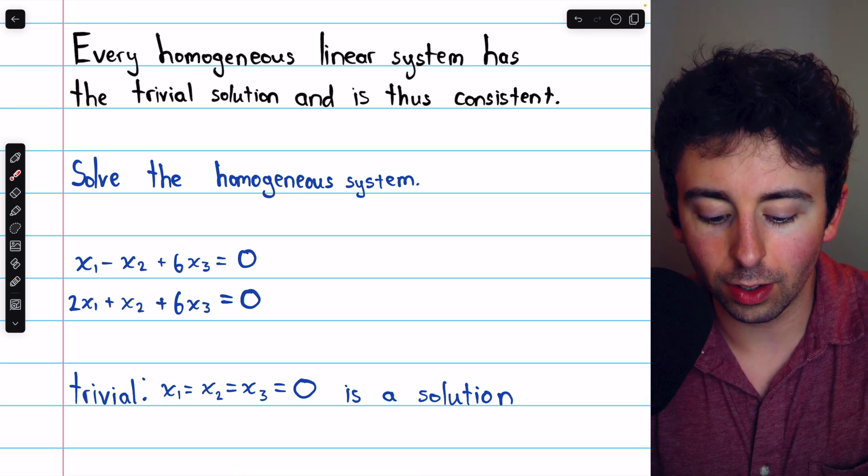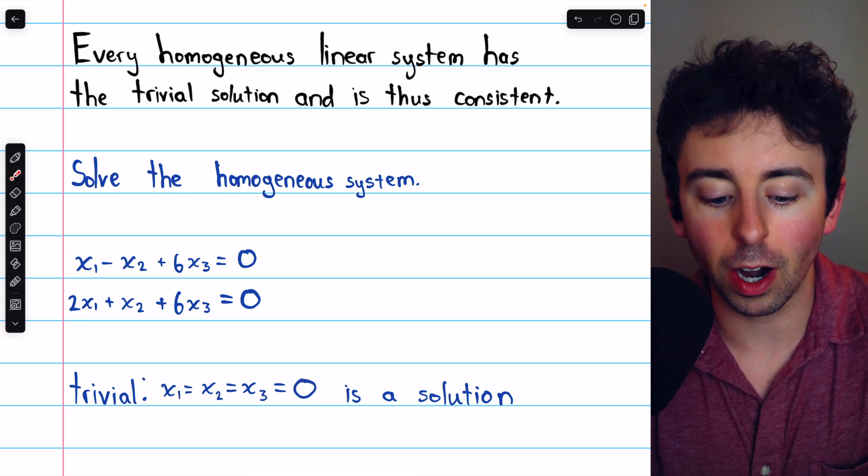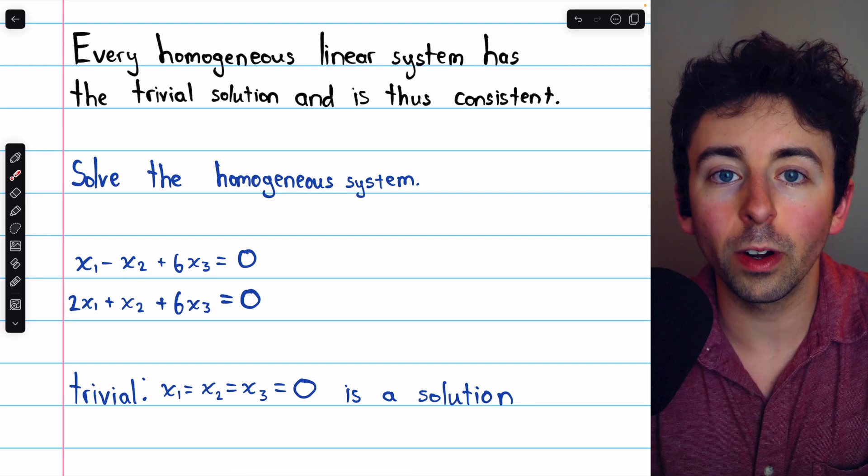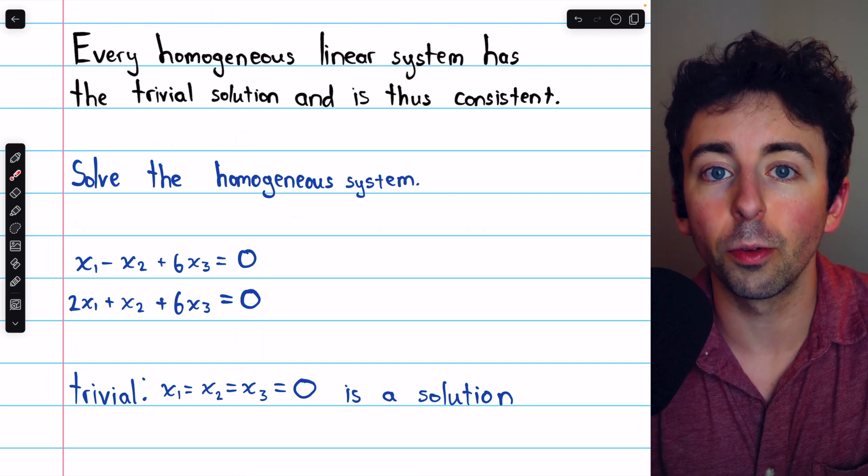That trivial solution is just setting all the variables equal to zero. If all of these variables on the left are equal to zero, then of course, they'll all be equal to these zeroes on the right.